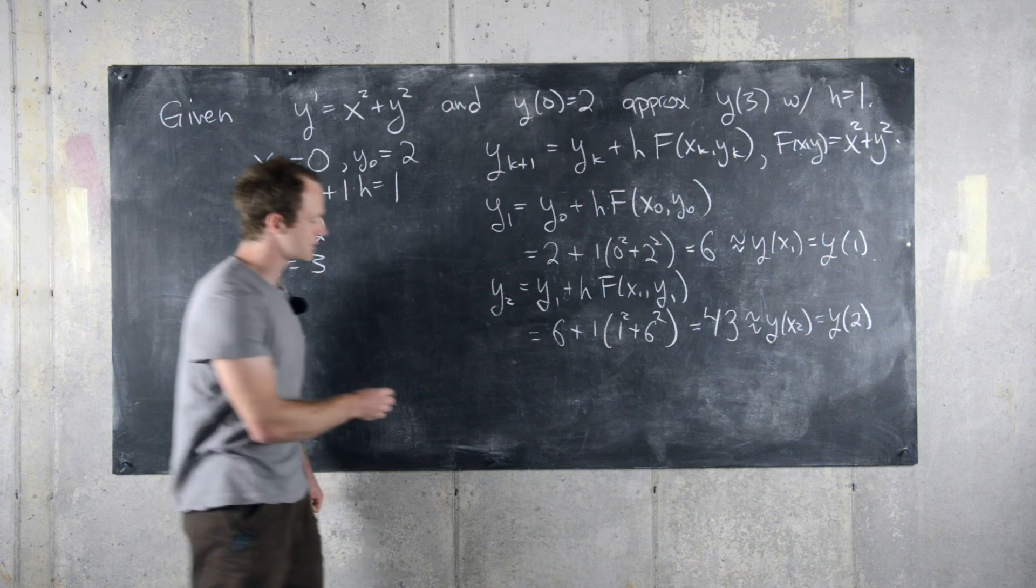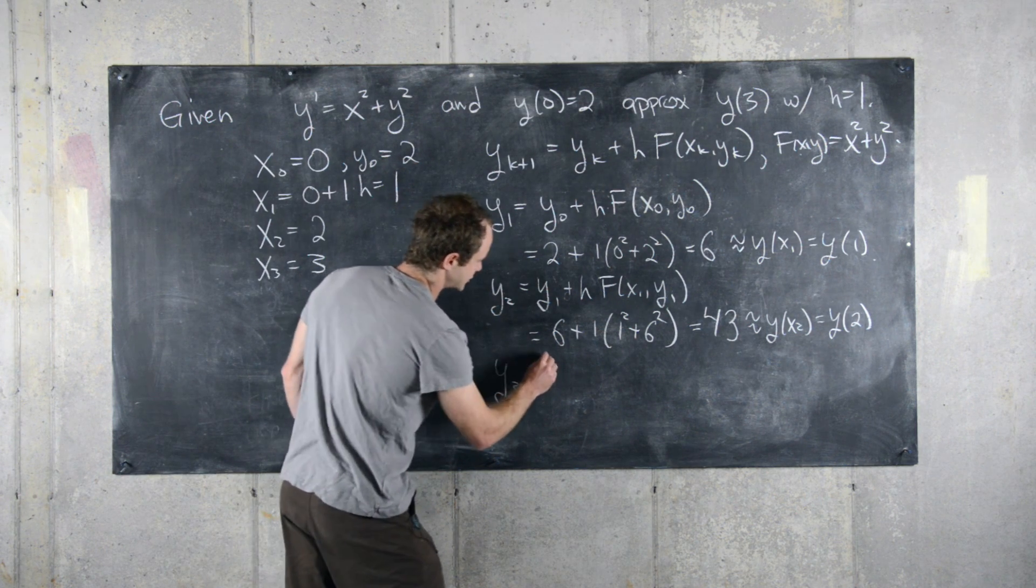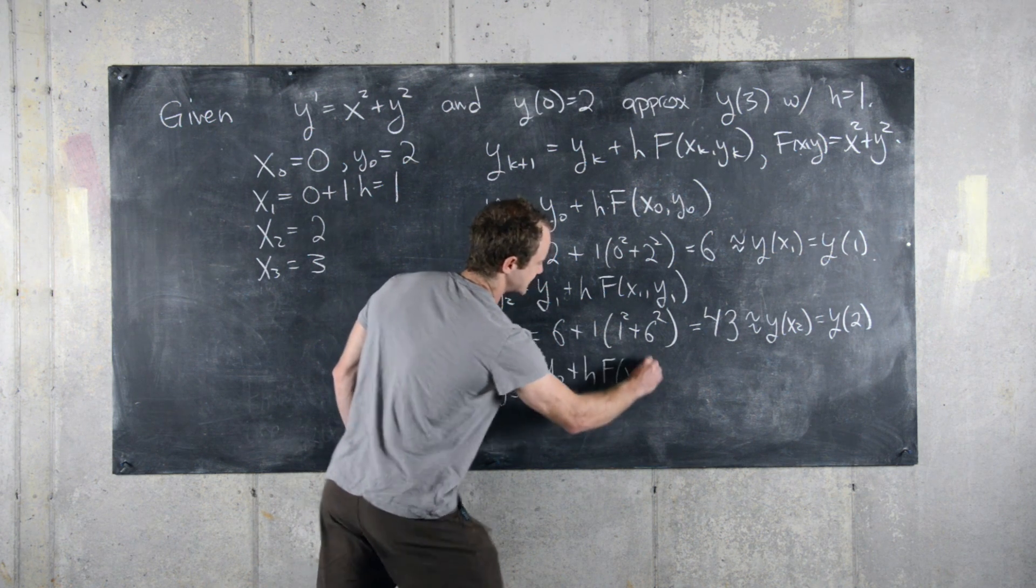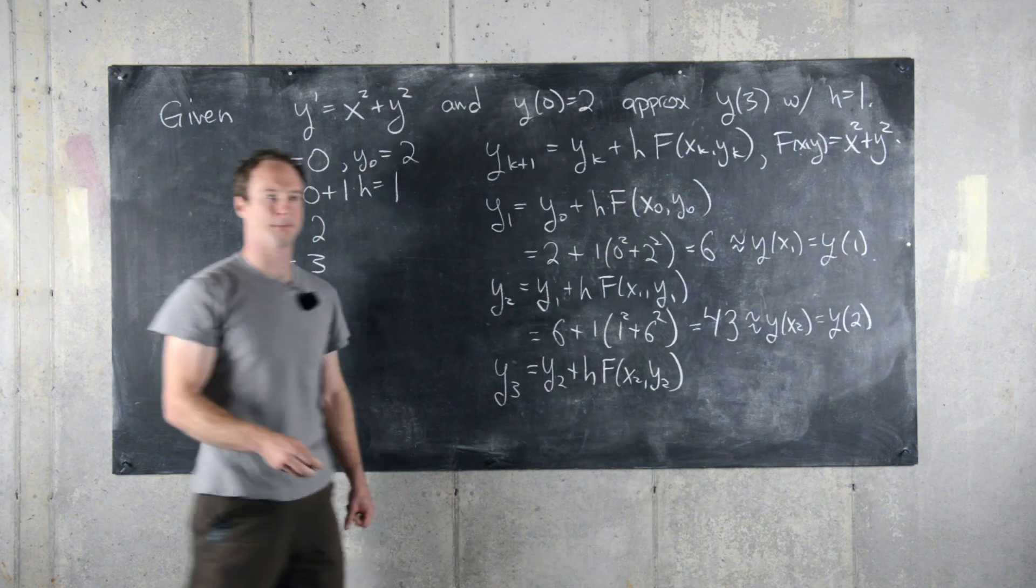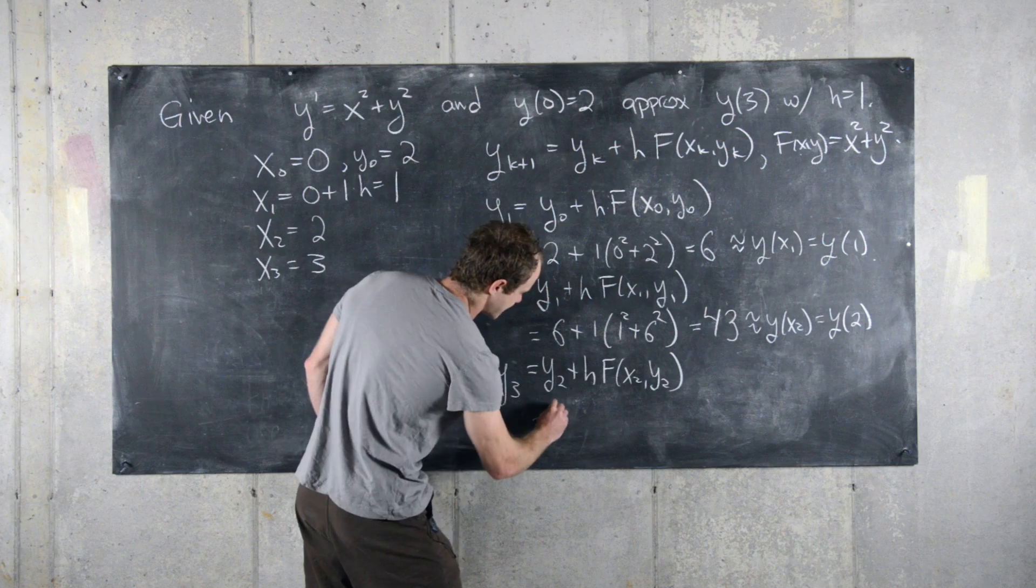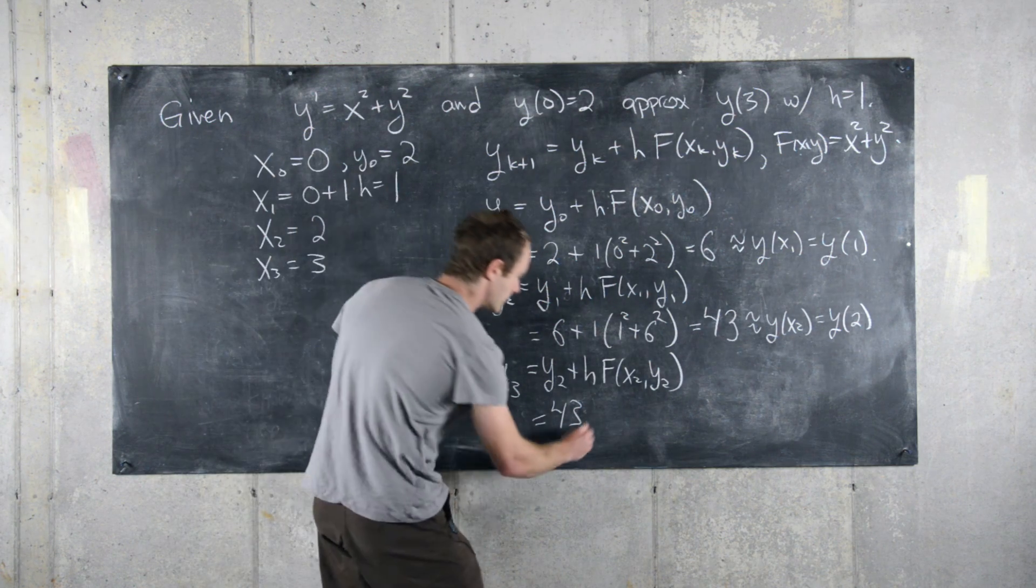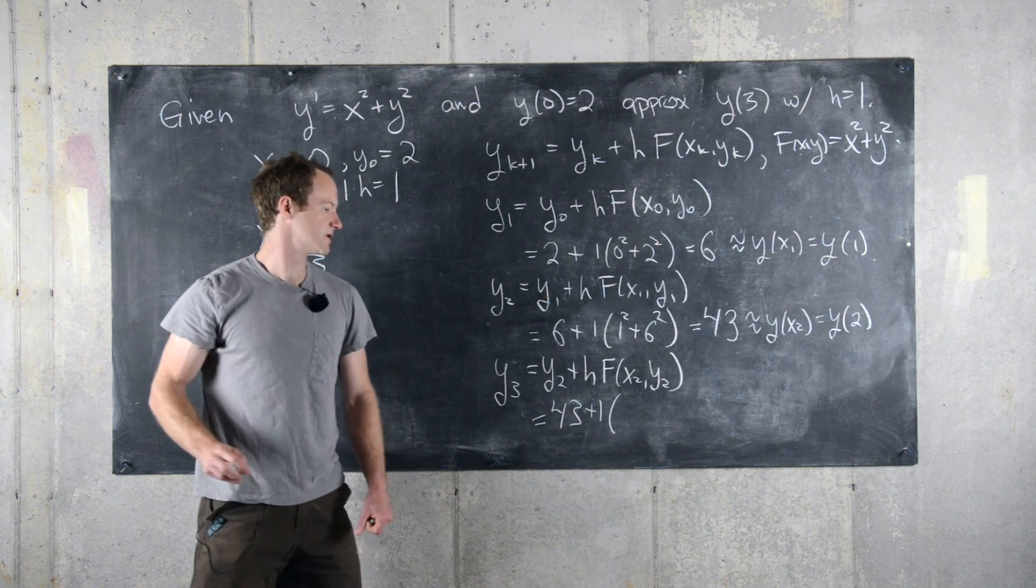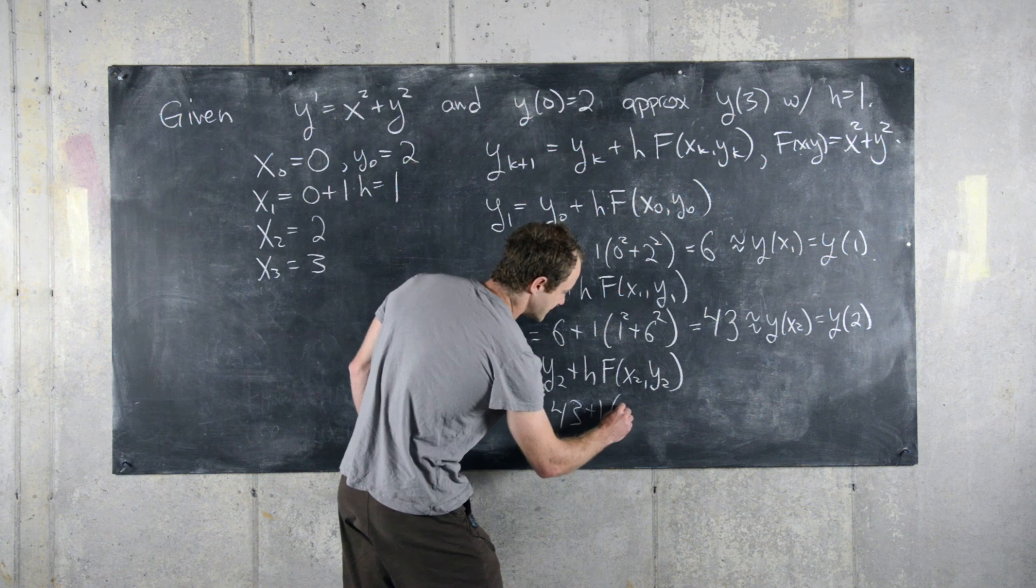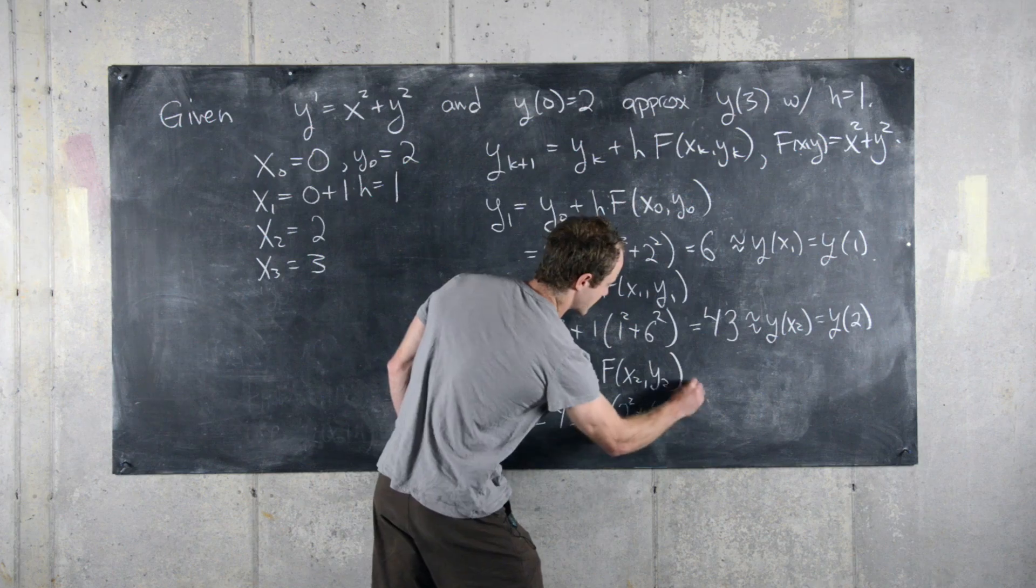So we have one more time to go through this. Y of three will be equal to y of two plus h, f of x two, y two. So that will be equal to 43—that's our value of y two—plus one times, so x two equals two, so we have two squared plus y two is 43, so 43 squared.